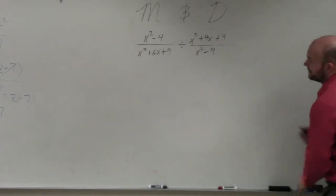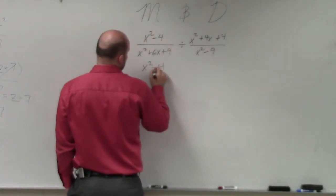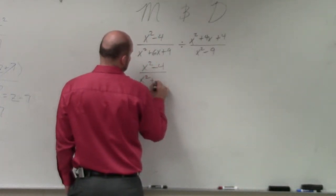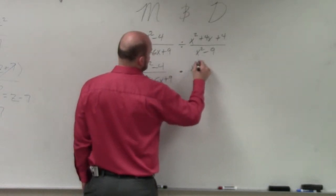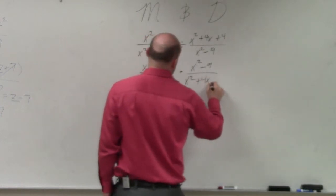The first thing we're going to have to do is rewrite the problem. So I have x squared minus 4 divided by x squared plus 6x plus 9 times x squared minus 9 divided by x squared plus 4x plus 4.